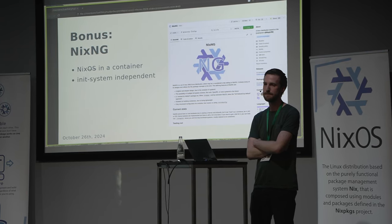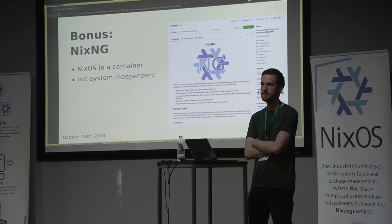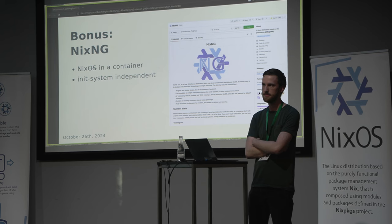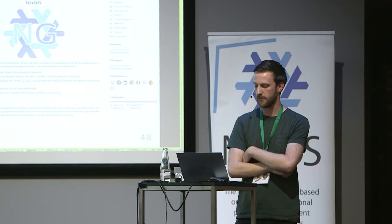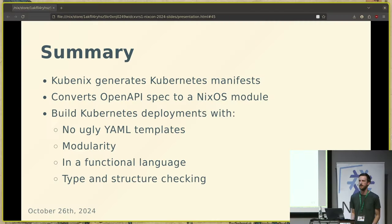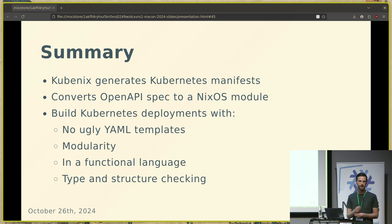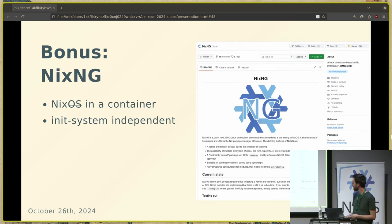[Q:] Some Nix packages have their own NixOS service configuration options — for example for Jellyfin. If I configure those in my Nix configuration, are they going to be applied to the Kubenix deployment? [A:] Kubenix doesn't implement those options that Jellyfin exposes — you still have to provide that yourself as a configuration file or a command-line parameter. Kubenix in itself doesn't do that.